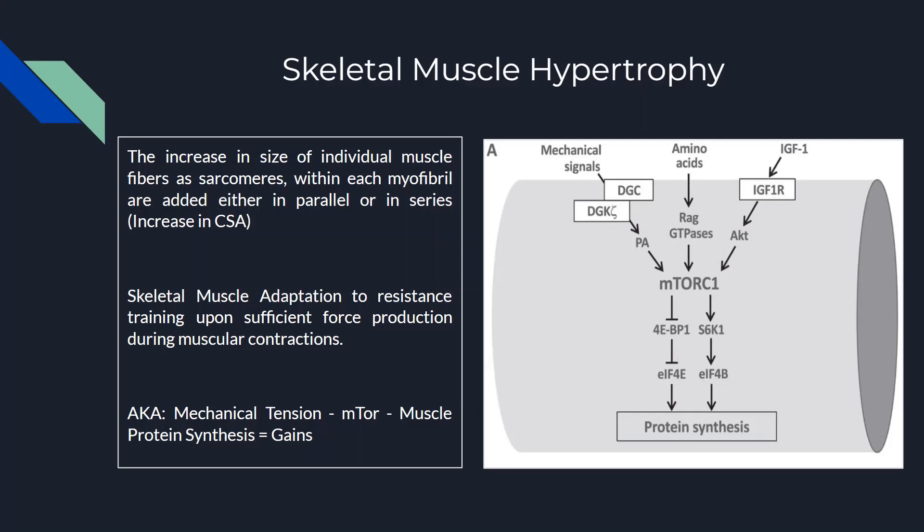For example, external forces could be a dumbbell, a barbell, resistance bands, machines, etc. Now mechanical tension stimulates mTOR. mTOR is a switch — a switch that, if turned on, leads to an increased amount of muscle protein synthesis. Muscle protein synthesis is the addition of new proteins, and over time you see increases in muscle size.